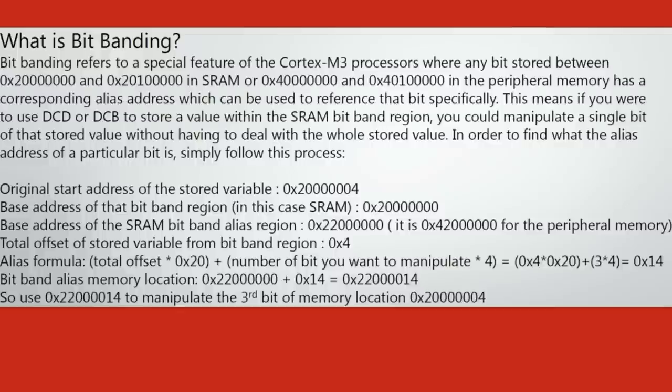There's a specific formula you need in order to get the associated single bit banded memory location to correlate to the single bit you wish to manipulate. You first need to know where the original start address of the memory location you wish to write to. In this case, I'm using the hex 0x20000004 memory location because it is one of the first words written into the memory. The base address of the bit band region, that is the region that you write to when you refer to the bit banded memory addresses, is the hex 0x20000000 section.